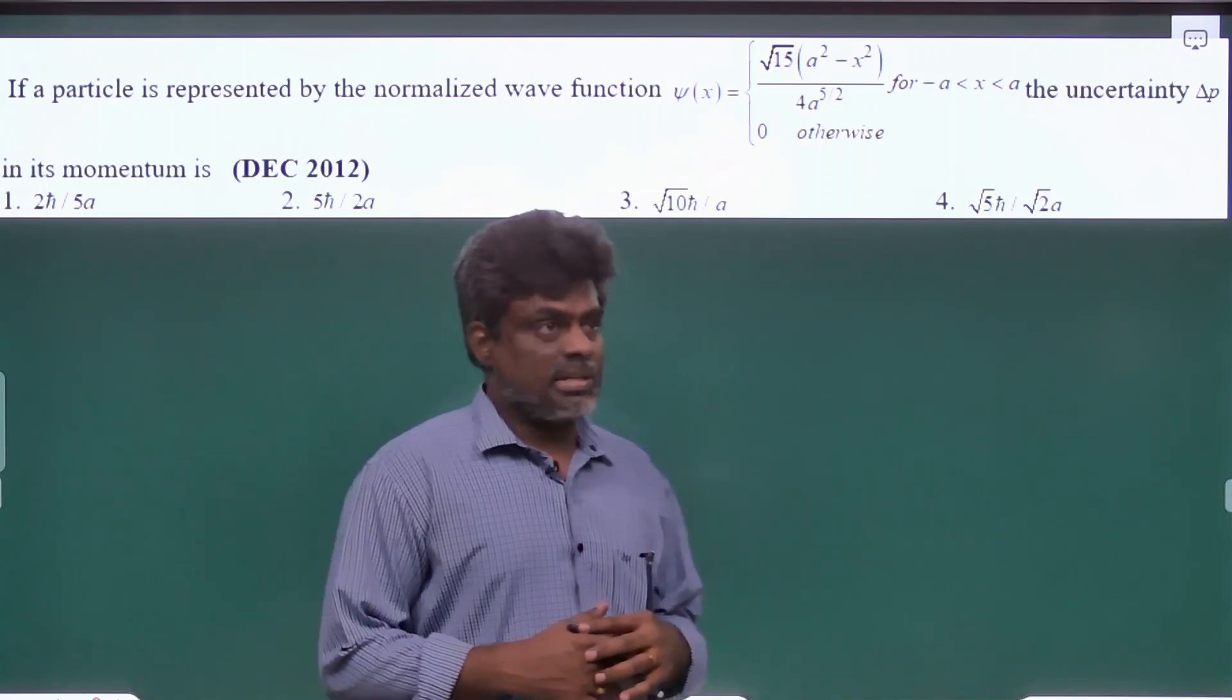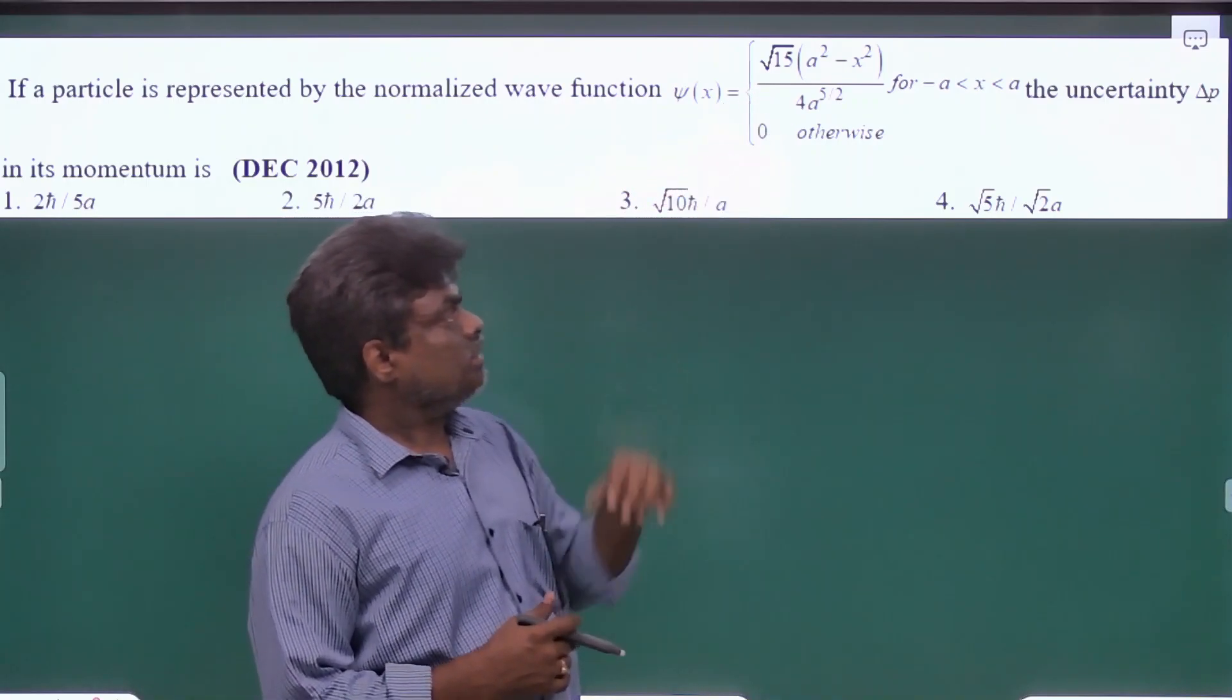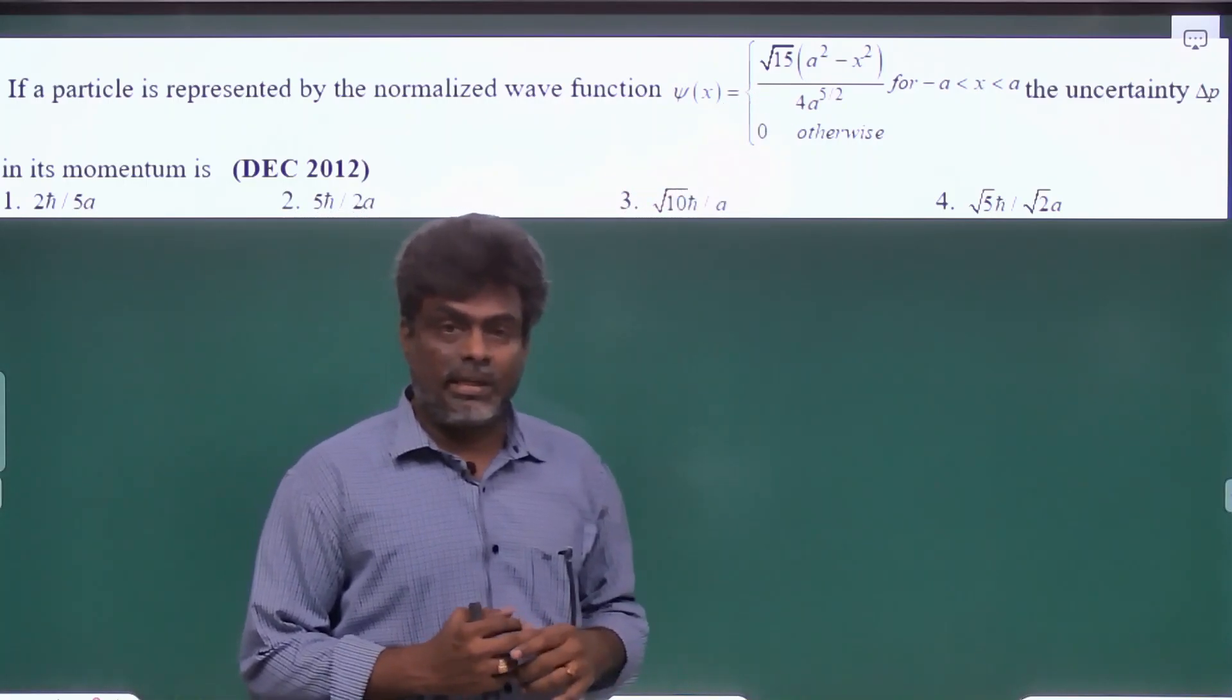Welcome to UV physics. Here they have given a normalized wave function and they are asking for the uncertainty delta p.